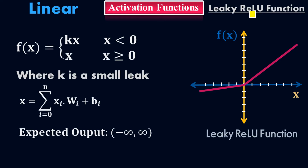Unlike ReLU, in the Leaky ReLU activation function we still have negative values on the negative side. If you pass a negative value as input to the neural network model using Leaky ReLU, you may get a negative value as an output. But if you put a positive value, you will get exactly the same positive value as an output. Because we have a small leakage, we put kx for the negative side.